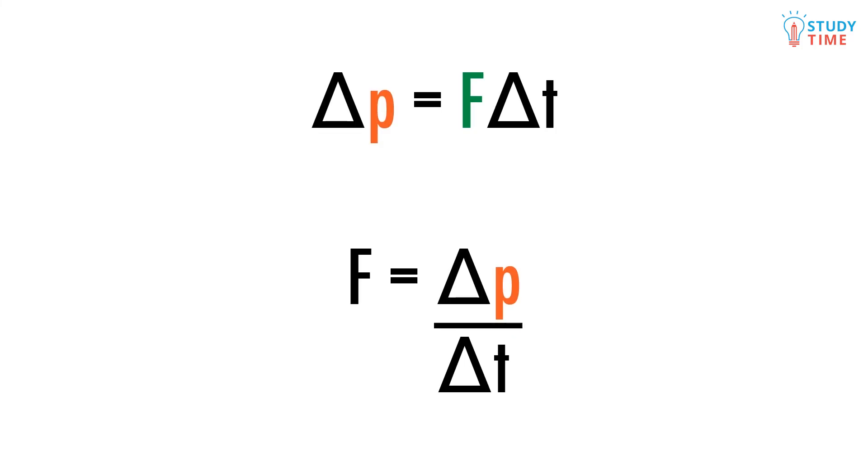One question that the examiners might ask you is about how the F equals delta p over t equation can be used to make car crashes or other collisions safer for any people involved. This sounds pretty scary, but it's straightforward as long as you remember that a lower force equals less chance of injury.